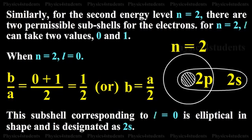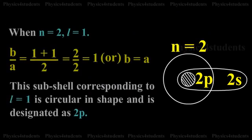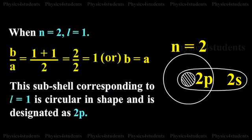Although 2s is historically considered elliptical, nowadays it is treated as a spherical shell. For n = 2 and l = 1, substituting gives b = a, meaning the major and minor axes are equal. This corresponds to a circular or spherical shell — the 2p orbital.